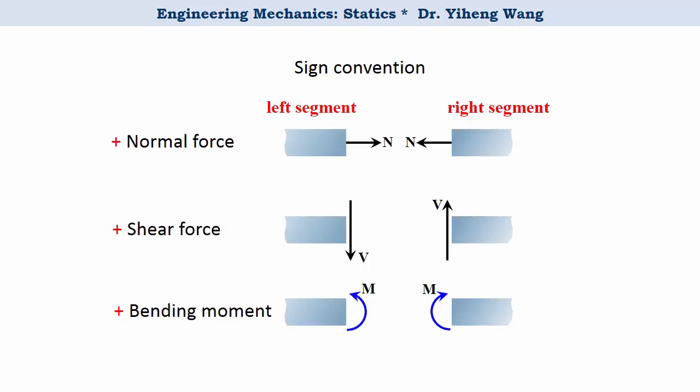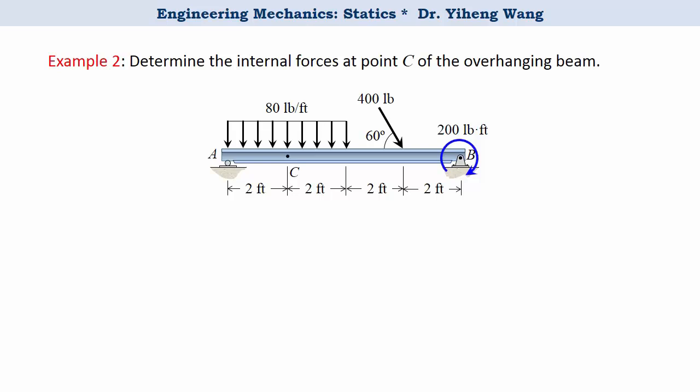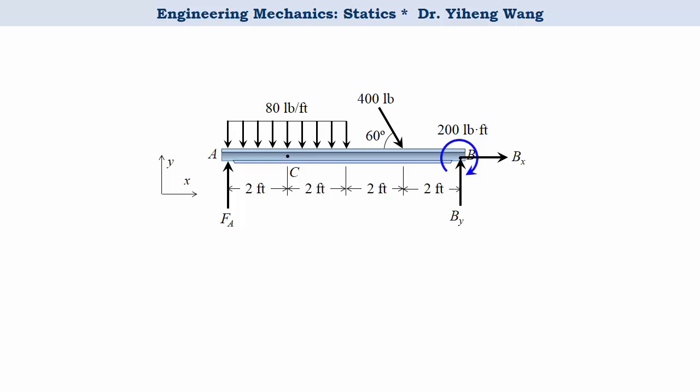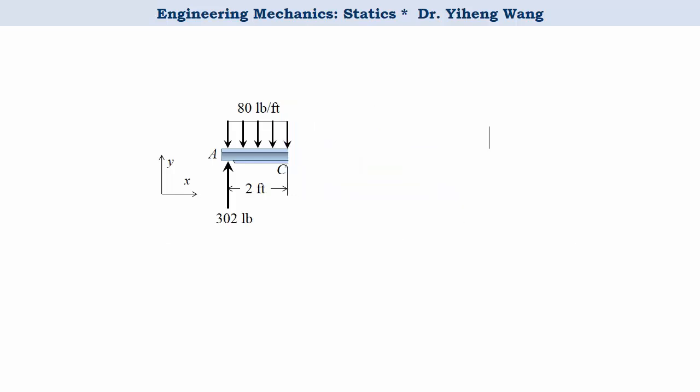Now let's quickly look at another example. Determine the internal forces at point C. Again, we'll apply the method of sections. First let's choose the side we want to solve. In this example, we inevitably have to solve for some external support reactions first. But at point A we have a roller support with only one support reaction, versus at point B we have a pin support with two support reactions. Therefore we choose the left side with the roller support. So we solve for force FA at the roller support using one moment equilibrium equation.